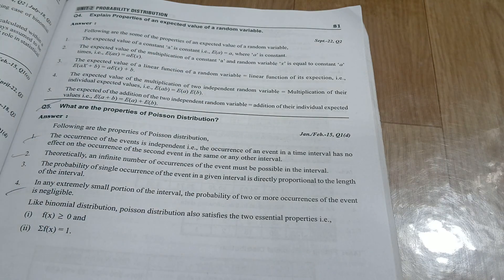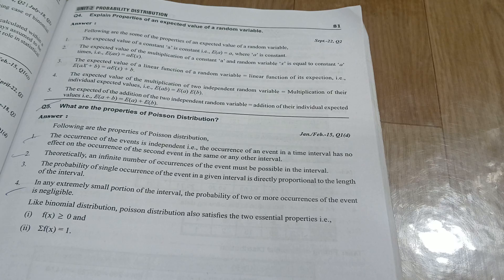There are various properties in Poisson distribution. Any three properties are more than enough.